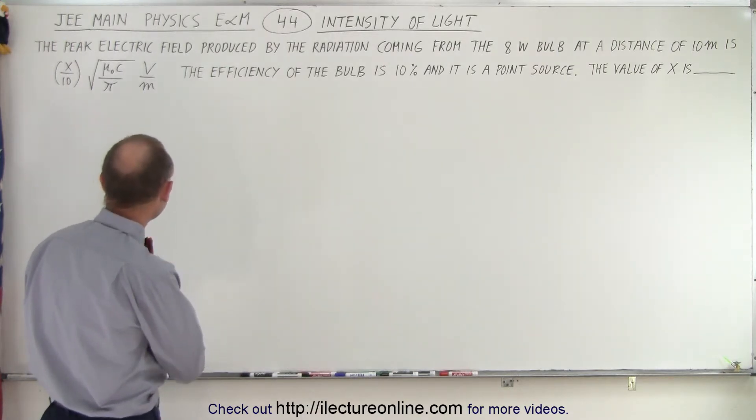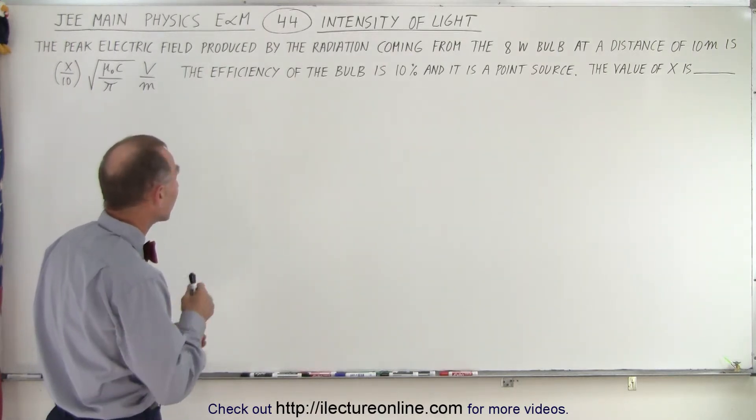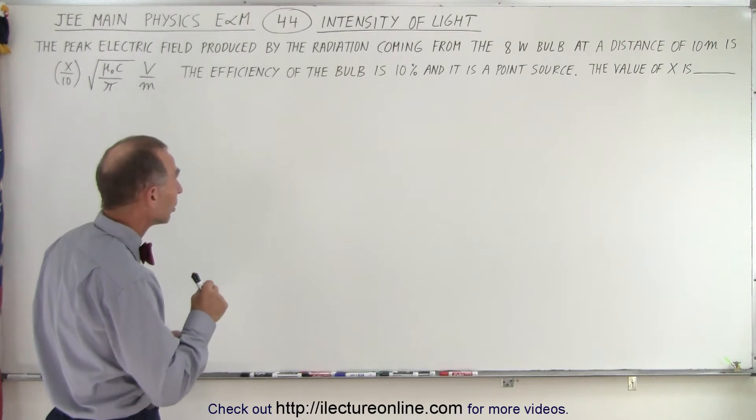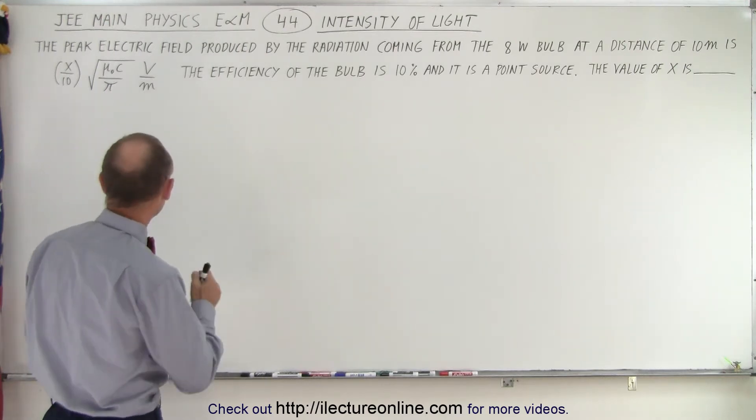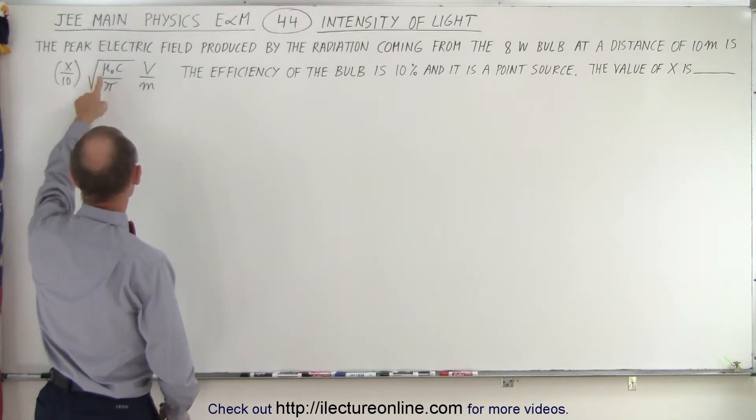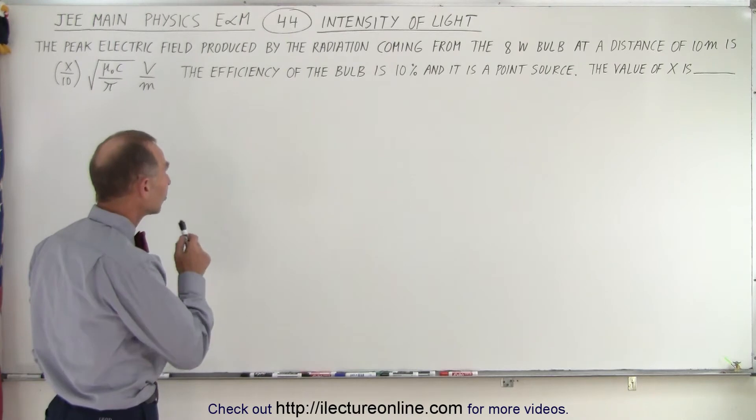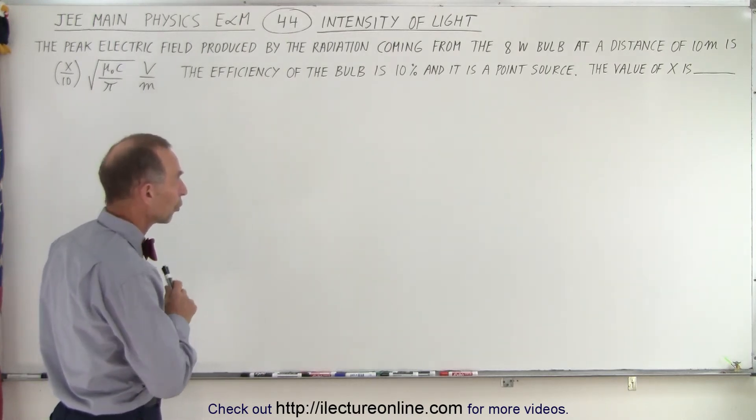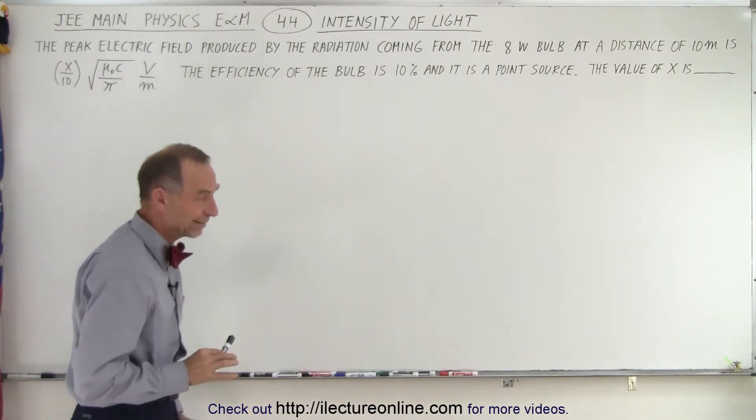So here we have the peak electric field produced by the radiation coming from an 8 watt bulb at a distance of 10 meters is x over 10 times the square root of mu sub naught c over pi in volts per meter. The efficiency of the bulb is 10% and it is a point source, the value of x is.